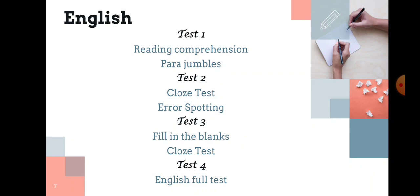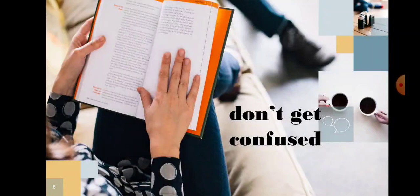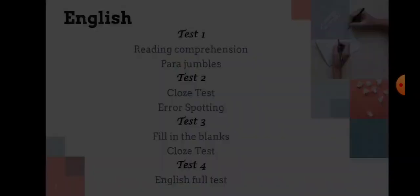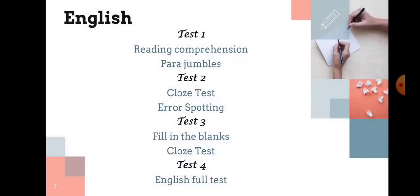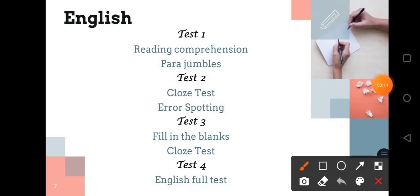Regarding English, test number one: reading comprehension, para jumbles - 100 questions. Test number two: cloze test, error spotting - 100 questions. Test number three: fill in the blanks, cloze test as per IBPS AFO pattern - that is 150 questions, each section carries 50 questions. Totally you have 18 tests for prelims. The last full mock test is free - anybody can use this.